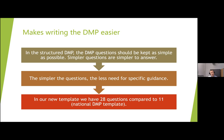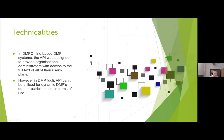Clearer questions that are easier to answer also make the guidance easier to follow. In our new template we have 28 questions compared to 11 in the current template. Some technical issues we found: in DMP online-based systems, the API was designed to provide organizational administrators access to the full text of all their users' plans. However, in DMP tool, the API cannot be utilized for dynamic DMPs because there are restrictions set in the terms of use, meaning visibility of even local plans is disabled at the moment.